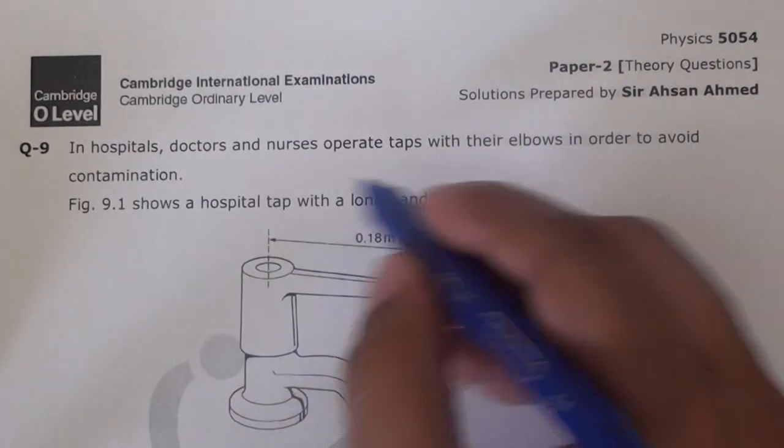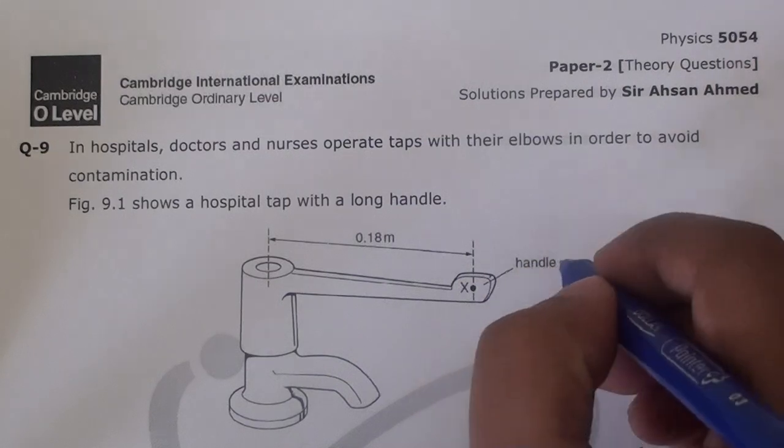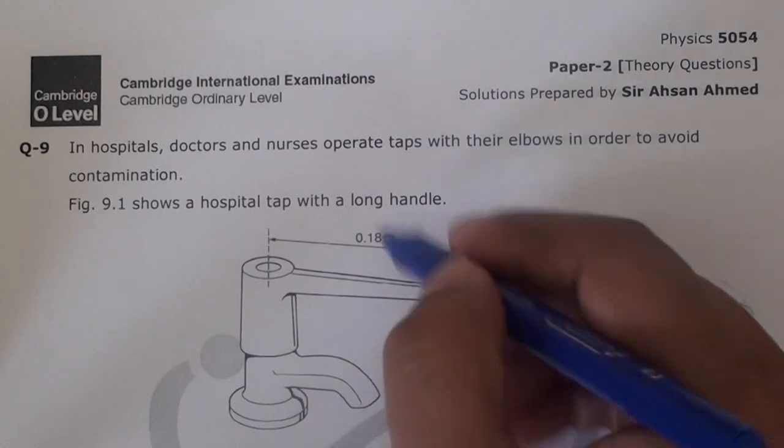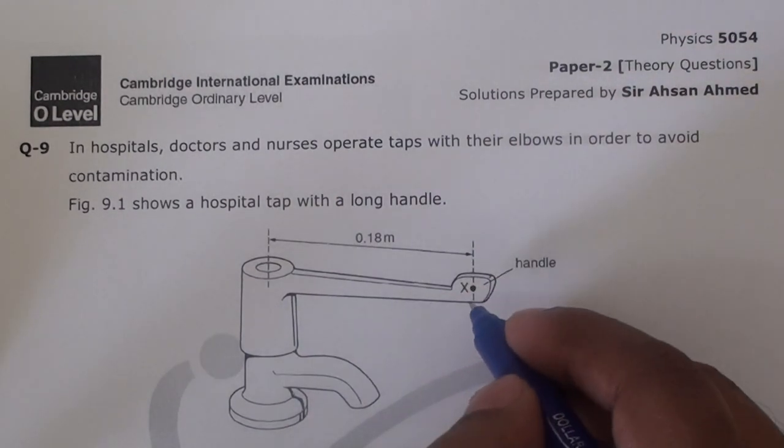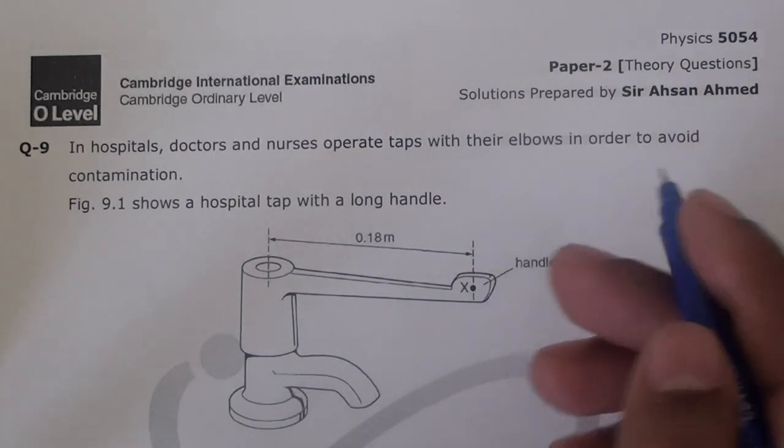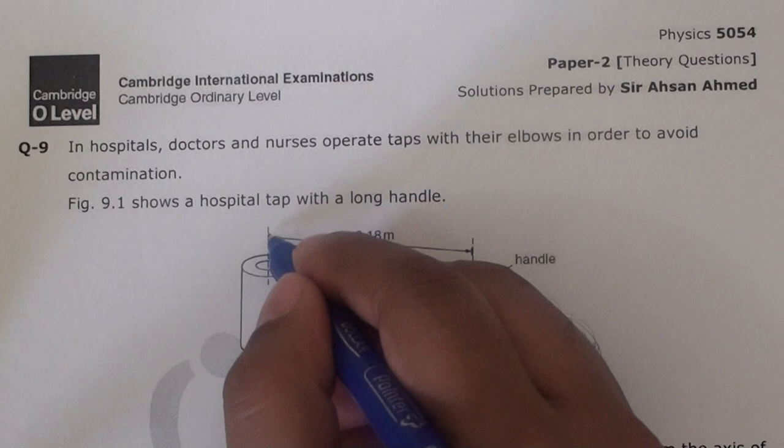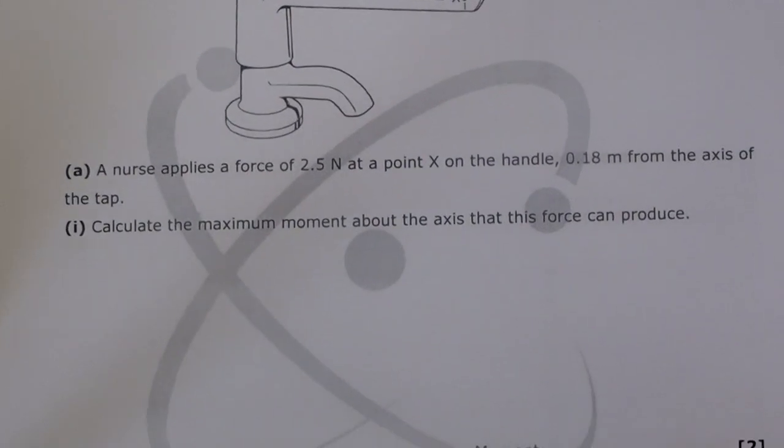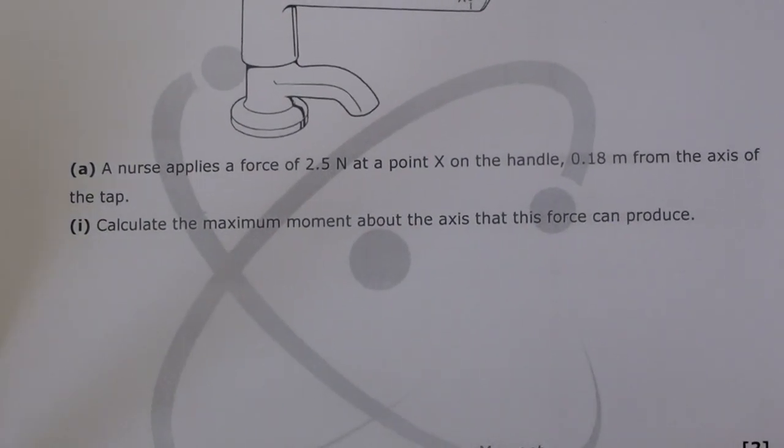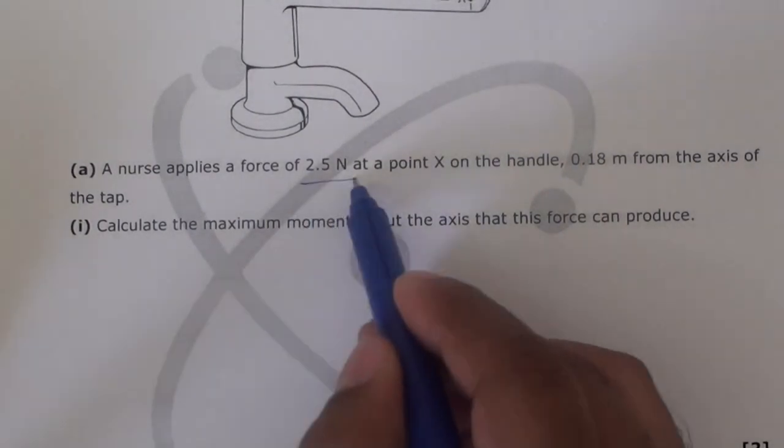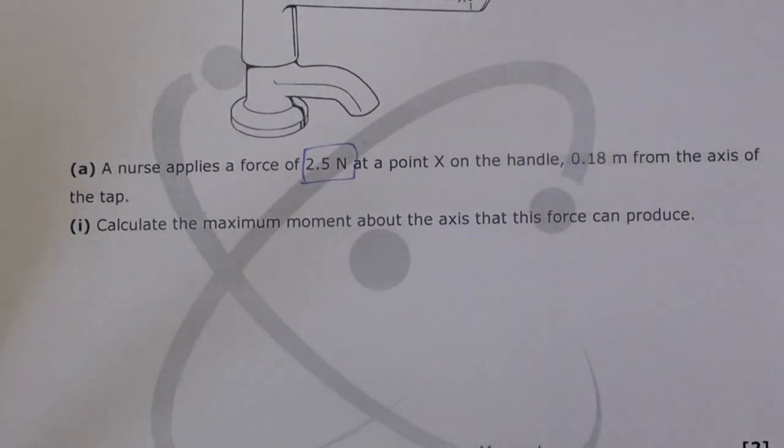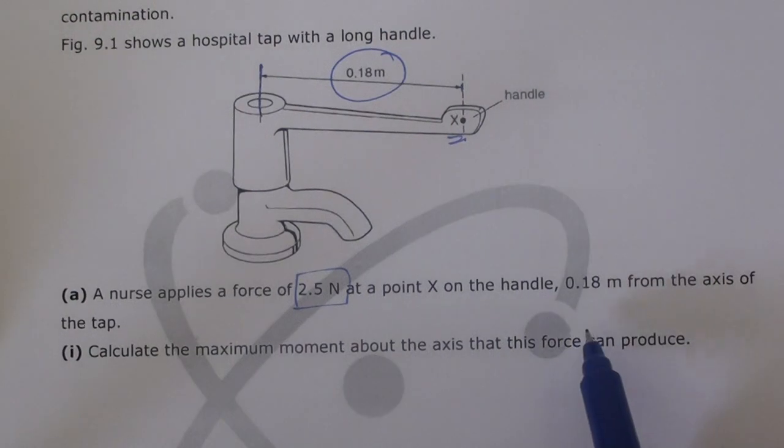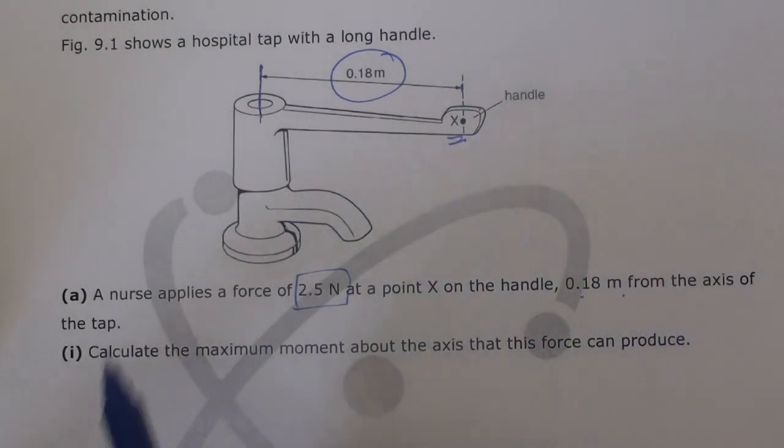Figure 9.1 shows a hospital tap with a long handle. They want it to be easier for them, right? Distance they have given is 0.18 meters. Now let's move to more information. Part A says a nurse applies a force of 2.5 newtons at point X. Point X, by the way, just to remind again, this is point X on the handle, 0.18 meters from the axis of the tap.